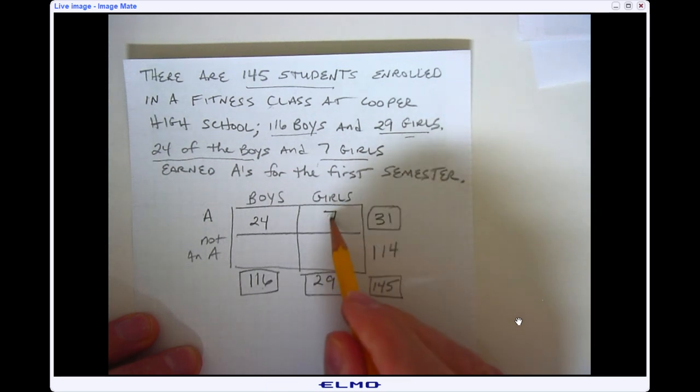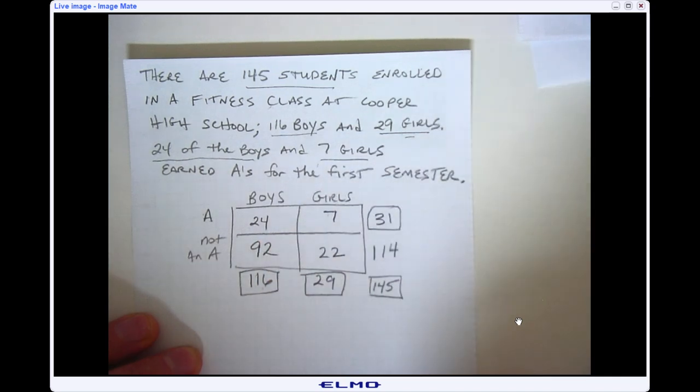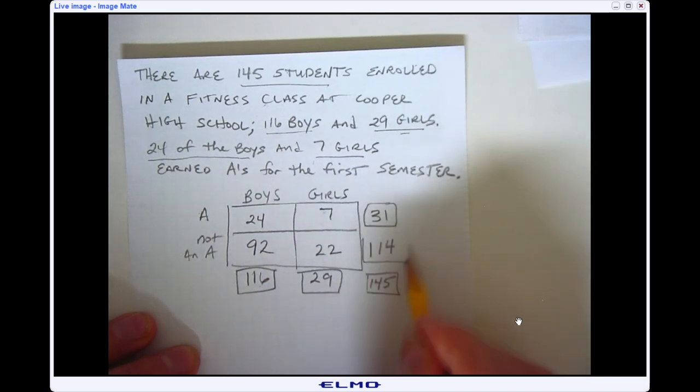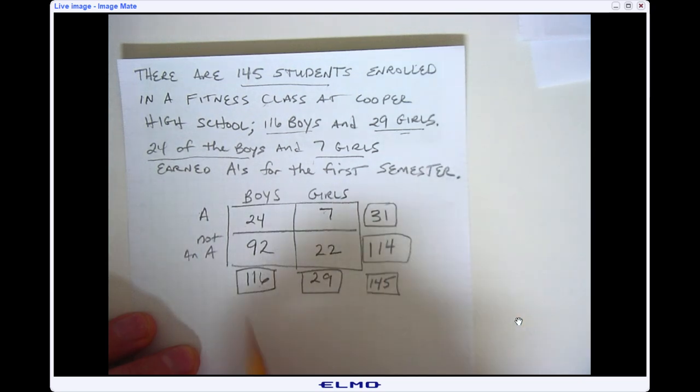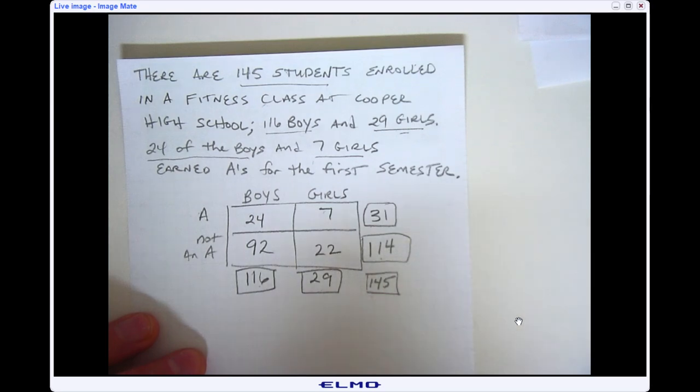And then if 7 girls got an A that means 22 did not get an A, and the same thing here if I do 116 minus 24 there's 92 students that did not get an A that were boys. So again my marginal frequency is there's 116 boys, 29 girls, 31 students in the class got an A and 114 did not get an A and there's 145 total students.